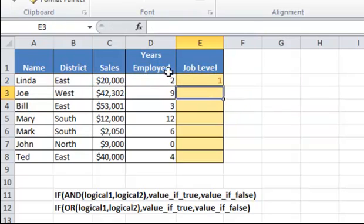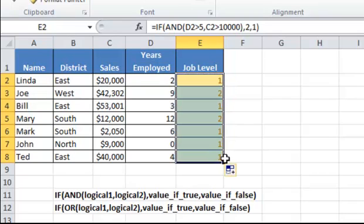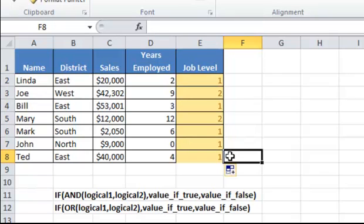So I'll copy down my formula to all of the salespeople. And this formula, if we've entered it correctly, should show job level code 2 for Joe and Mary only because they are the only two who have worked for the company for more than 5 years and they've had annual sales greater than $10,000.